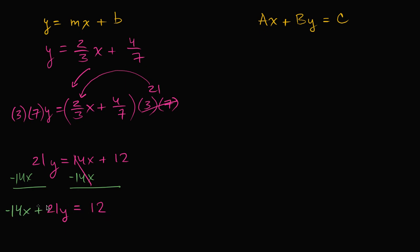If there was a common factor for all three of these numbers, then I would divide all of them the way I did in that previous example. But that's not the case right over here. So it's negative 14x plus 21y equals 12.